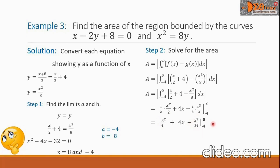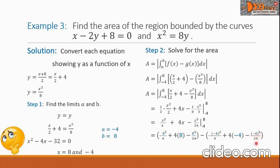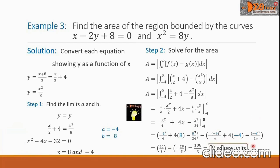Doing the evaluation with respect to limits, we get 8 squared over 4 plus 4 times 8 minus 8 cubed over 24, minus the square of negative 4 all over 4 plus 4 times negative 4 minus the cube of negative 4 all over 24. We can simplify the first group minus the second group. The first group simplifies to 80 over 3, minus negative 28 over 3. Combining these fractions, we will have 108 over 3, and we can simplify this into 36 square units. This is the final answer.